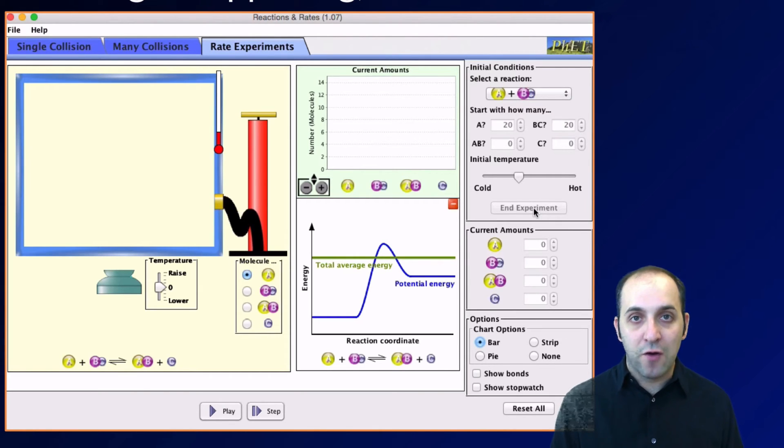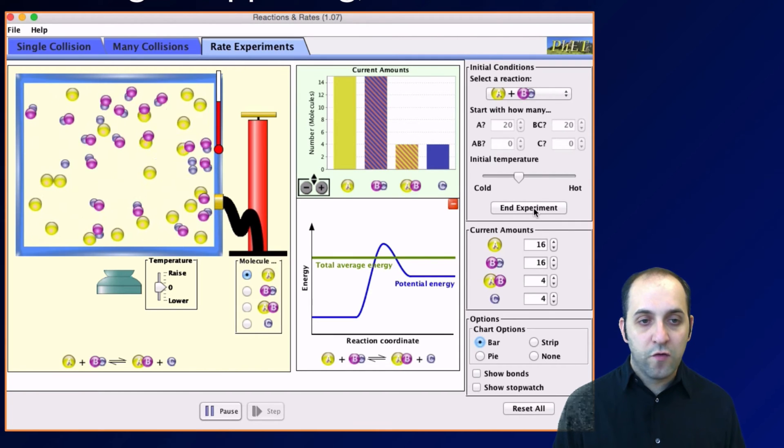Once we start, take a look at the graph showing the current amounts. It will be somewhat hard to see what's happening in the reaction chamber because everything's going to be moving so quickly. You'll see that initially we start out of equilibrium, but then eventually we do get to an equilibrium.